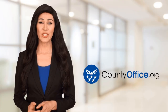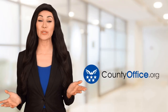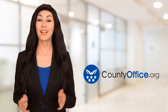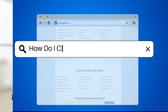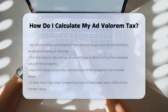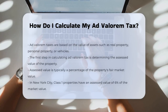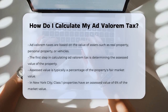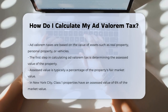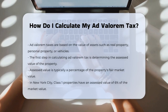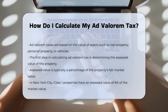Welcome to County Office, your ultimate guide to local government services and public records. Let's get started. How do I calculate my ad valorem tax? Ad valorem taxes are calculated based on the value of the underlying asset, which could be real property, personal property, or even vehicles. Here's a step-by-step guide to understanding how these taxes are calculated.